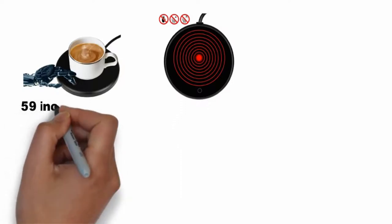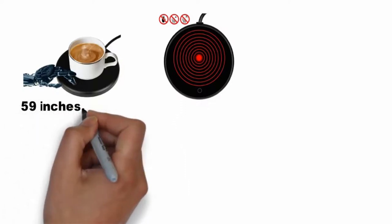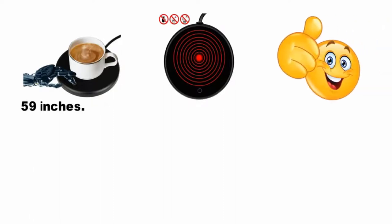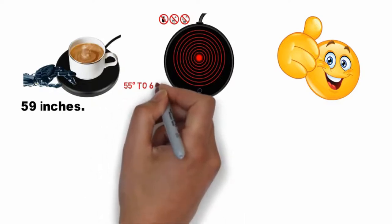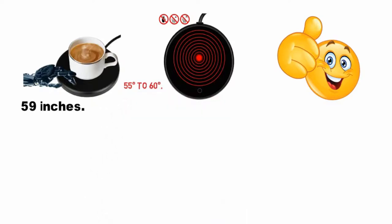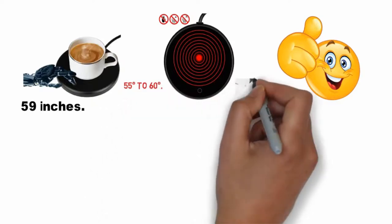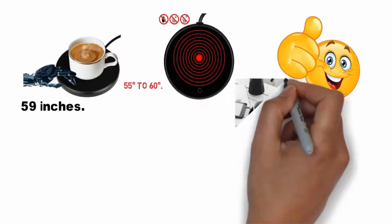The cord is 59 inches. The red indicator light indicates the temperature between 55 degrees to 60 degrees. The blue indicator light indicates the temperature between 40 degrees to 50 degrees. With the help of flat bottom mugs you can easily keep your beverage warm without any problem.